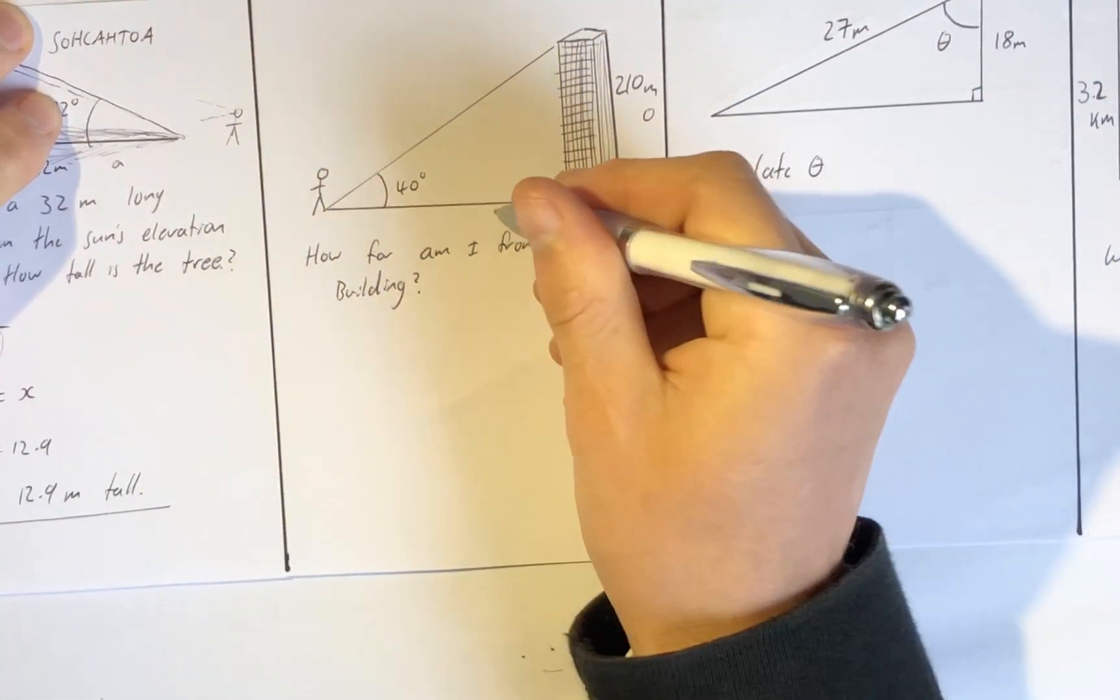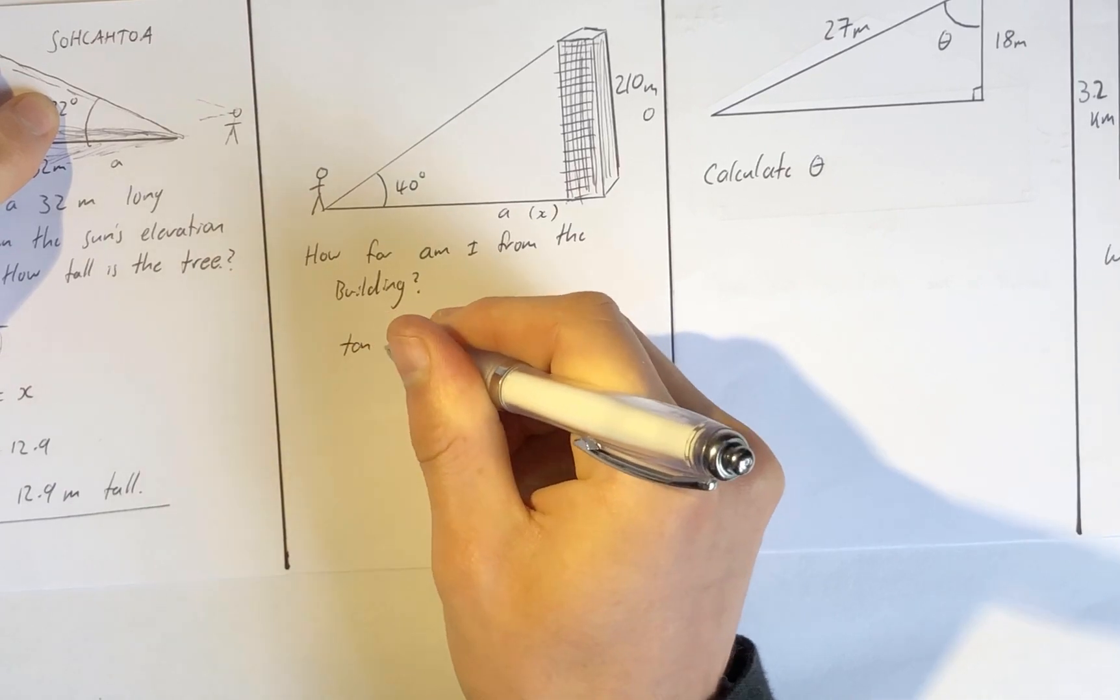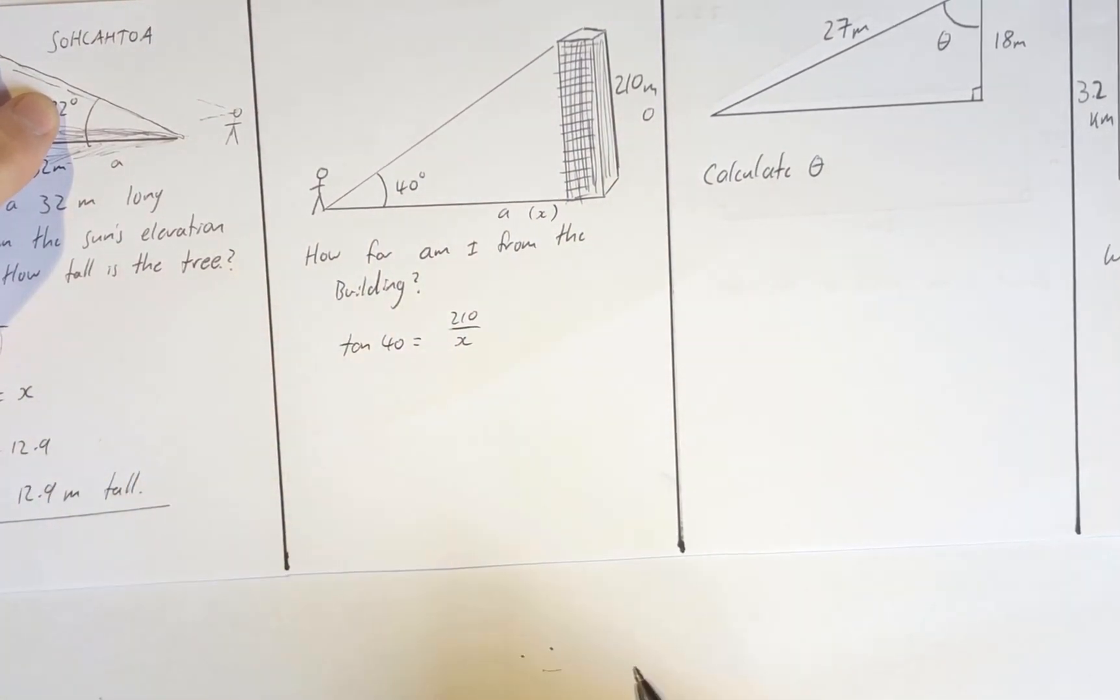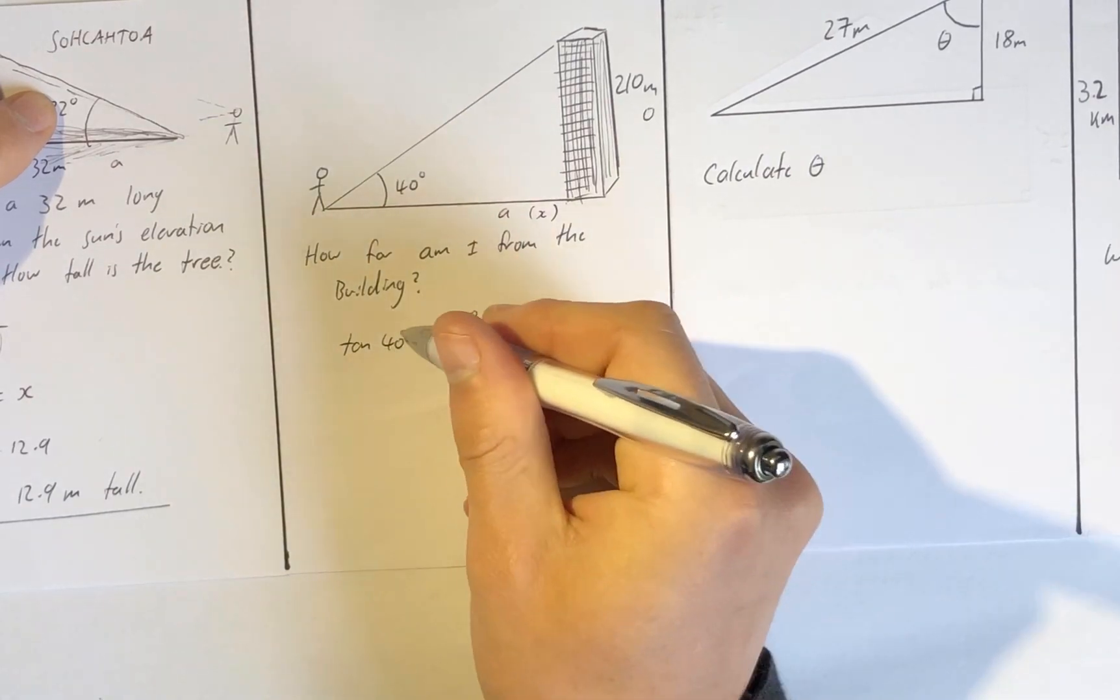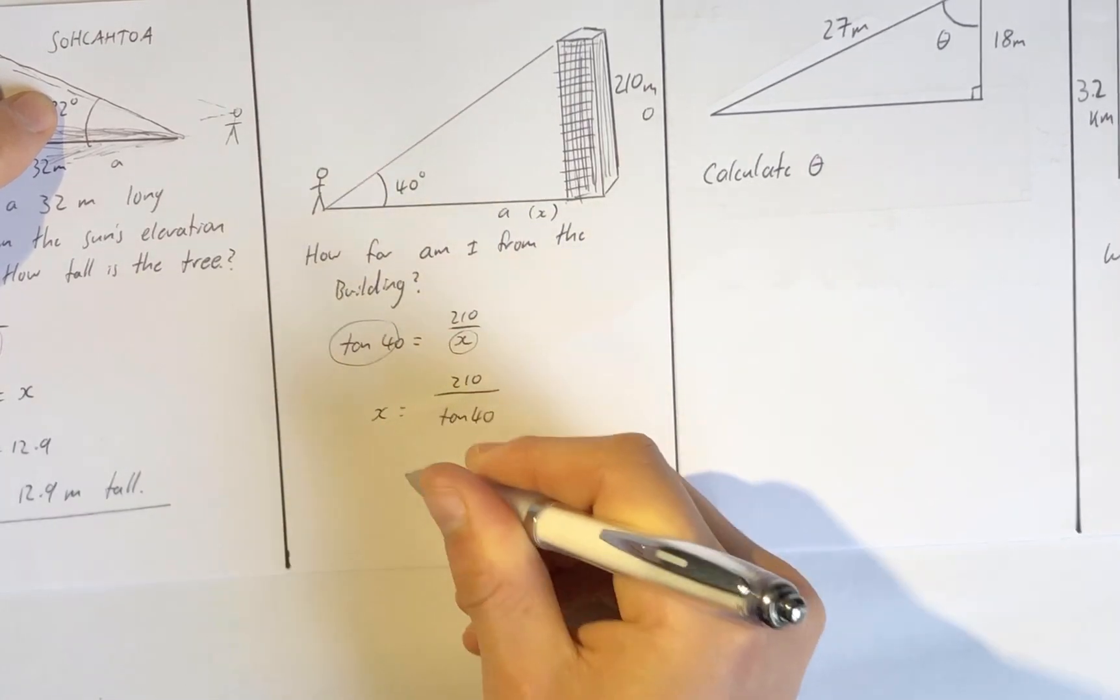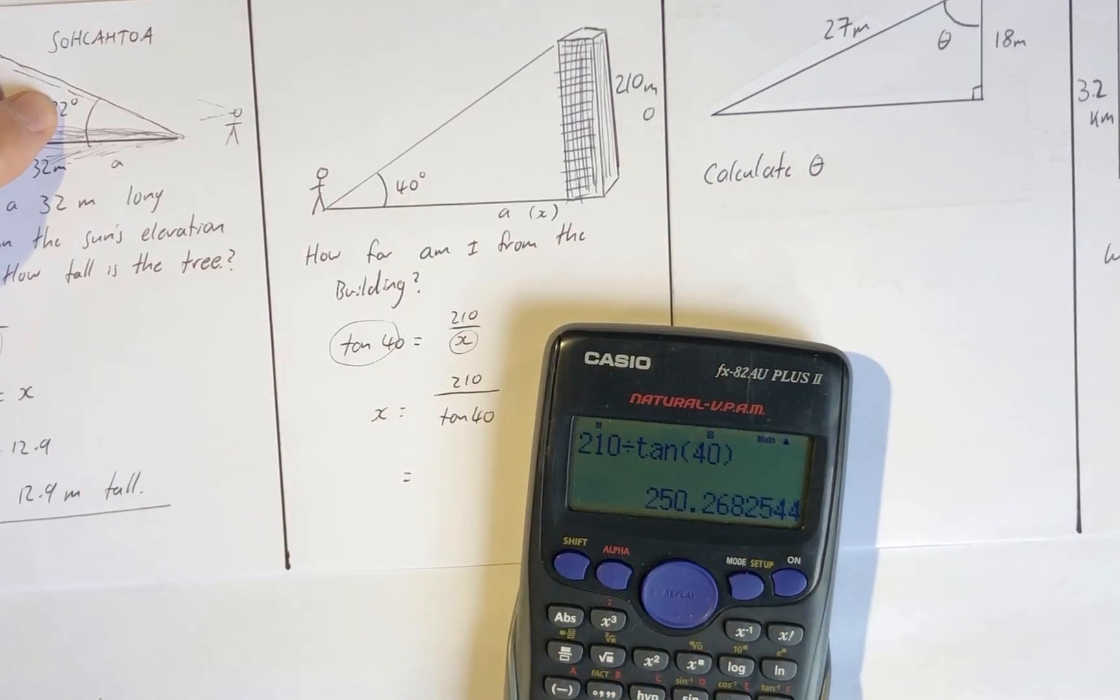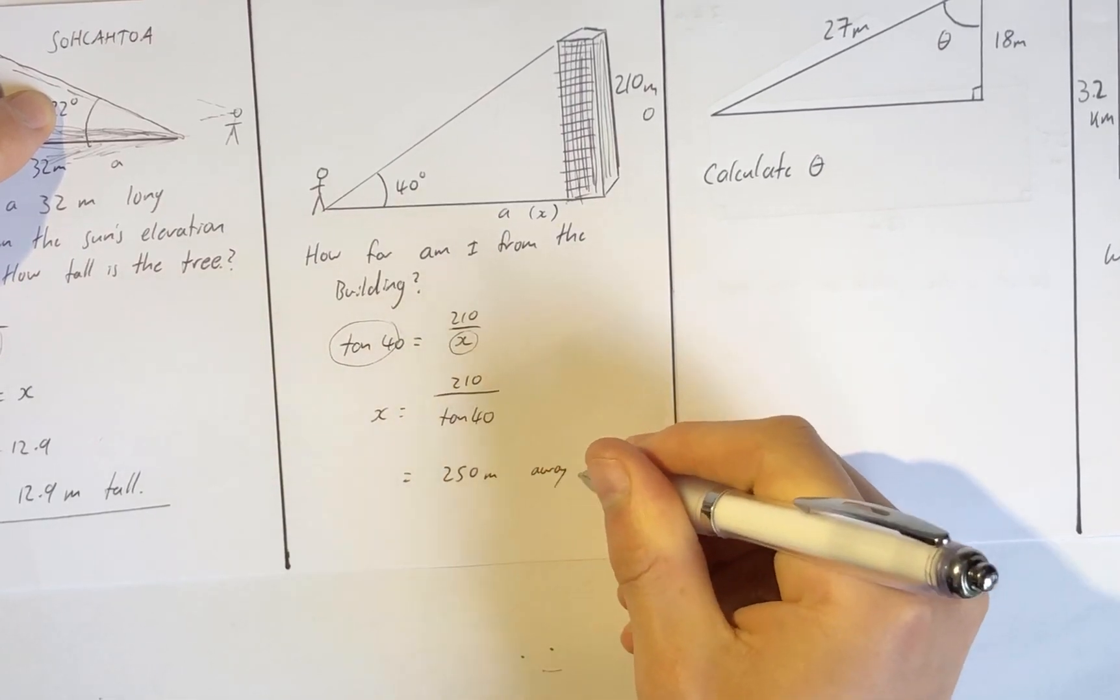I've got O and I'm wanting A, so this is side x. It's tangent again. Tan of 40 degrees equals O over A, which is 210 over the unknown side x. We don't have the denominator, only the numerator, so we swap both of those. x equals 210 over tan 40. That's 210 divided by tan 40.